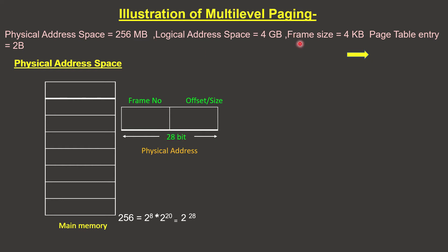Within those 28 bits, the frame size is 4 KB. We represent 4 KB in bits: 4 is 2 to the power 2, and 1 KB is 2 to the power 10, so 4 KB equals 2 to the power 12. That is 12 bits for the frame offset.